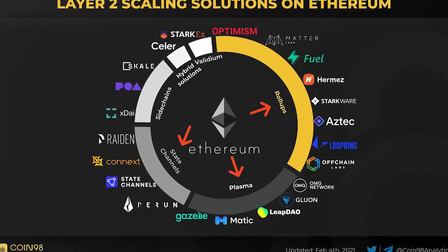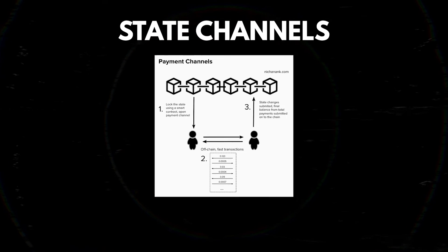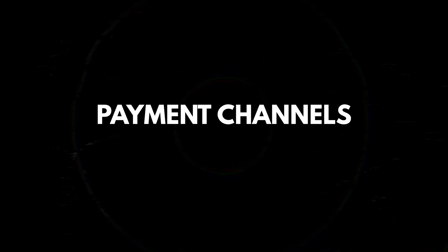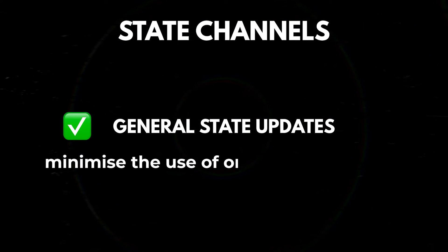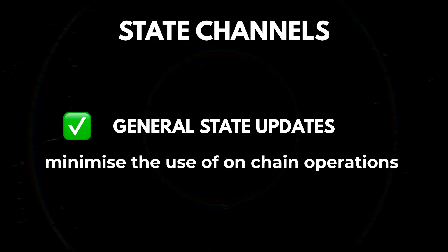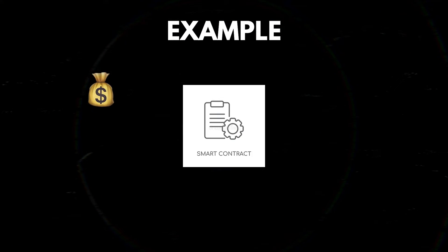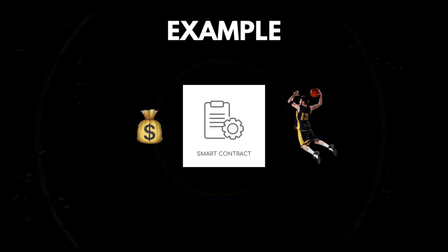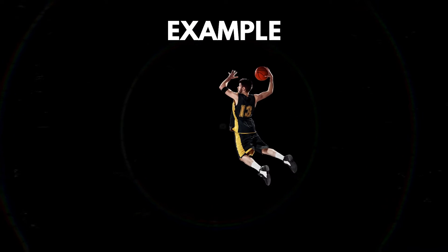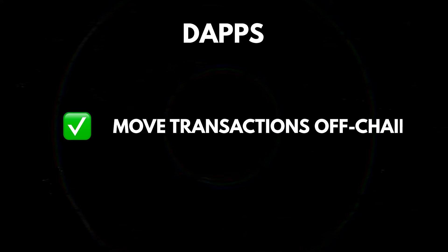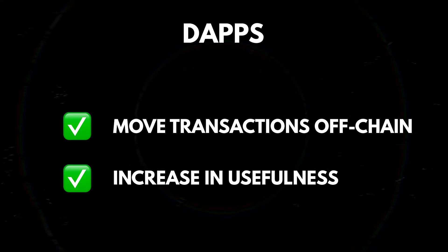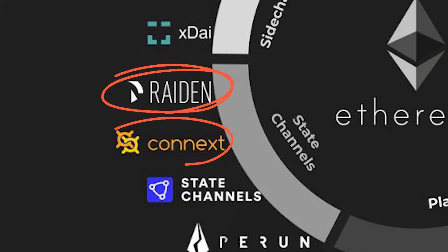State Channels improve blockchain performance by moving state-modifying operations off-chain. These are similar to the concept of payment channels in Bitcoin's Lightning Network, but instead of only being limited to payments, it supports general state updates — minimizing the use of on-chain operations to only what's necessary. For example, you deposit funds into a contract and sign state updates representing the running scores of a basketball game. When the game is finished, only the final outcome is broadcast to the Ethereum network. Projects working on State Channels solutions include Raiden Network and Kinex.